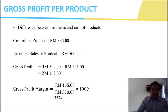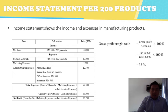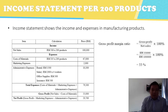The gross profit per product is the difference between net sales and cost of product. Our cost of product is RM335 and the expected sales price is RM500, giving a gross profit of RM165, which is 33%. The income statement shows the income and expenses in manufacturing the product. Our net sales of 200 products is RM100,000 and the cost of materials is RM67,000. Marketing expenses are estimated at RM2,000. Administrative expenses including rental, salary for 4 workers, office supplies, and insurance total RM10,300. Hence total expenses are RM79,300, giving a gross profit of RM33,000 and net profit of RM20,700.